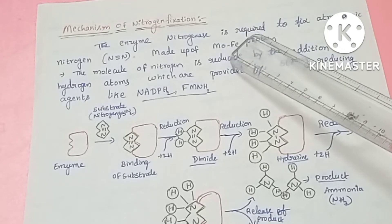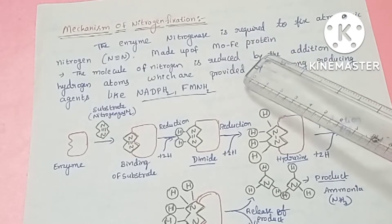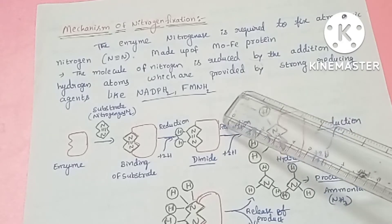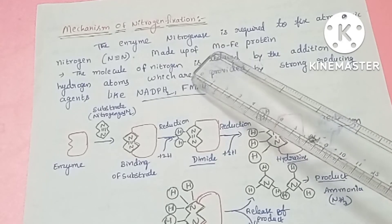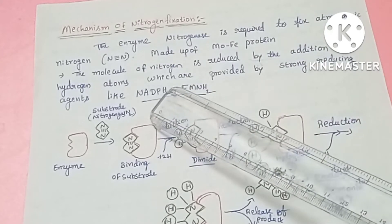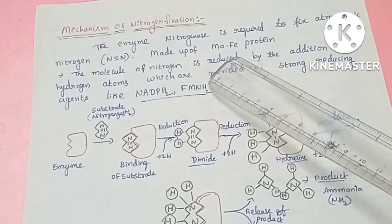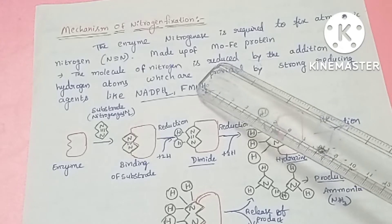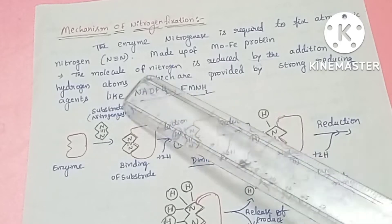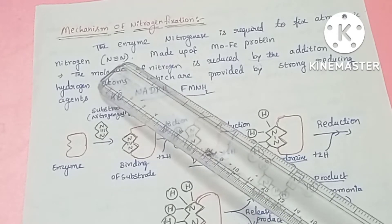I will cover nodule formation. The nodules contain leghemoglobin, a pigment. Nitrogen fixation converts atmospheric nitrogen using the enzyme nitrogenase, which is made up of Molybdenum Iron Protein. Atmospheric nitrogen in its elemental form has three covalent bonds.